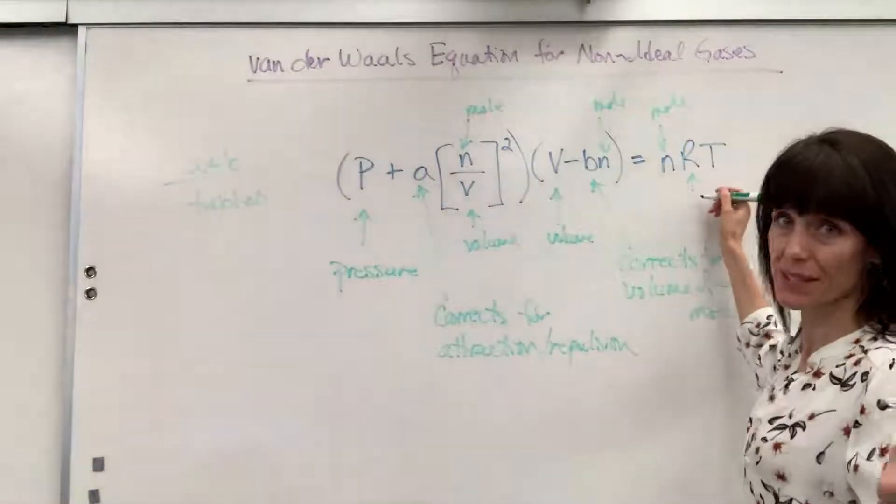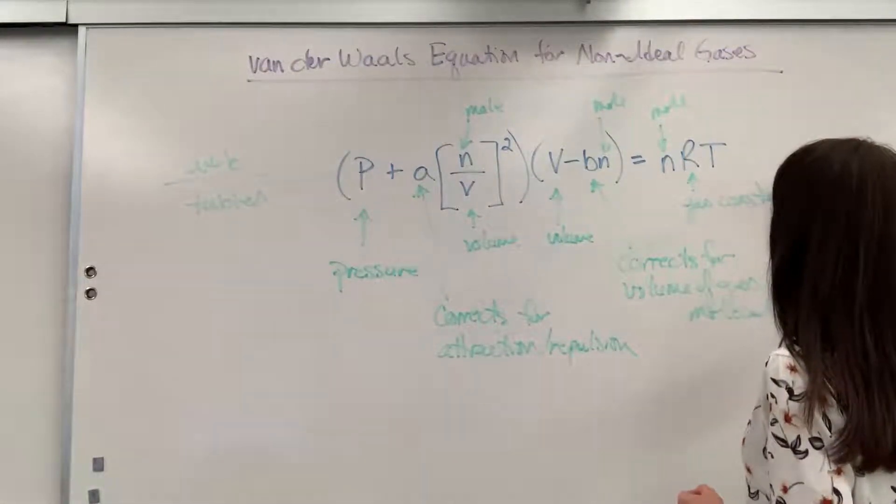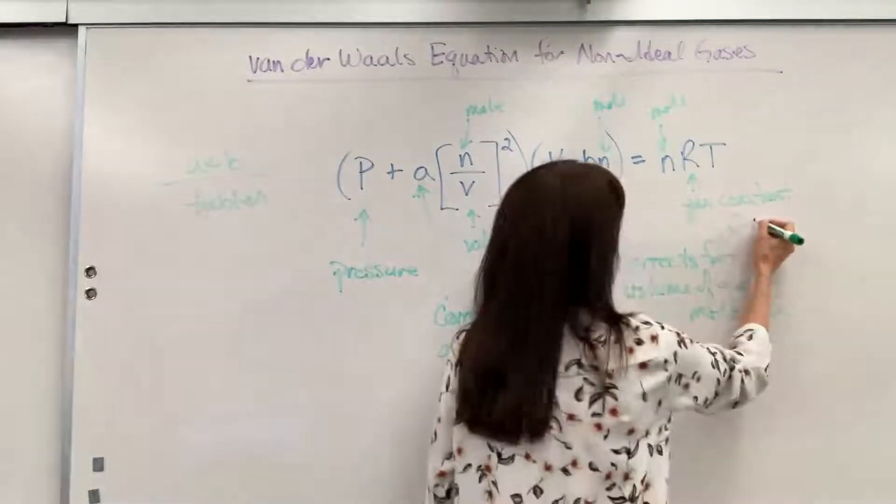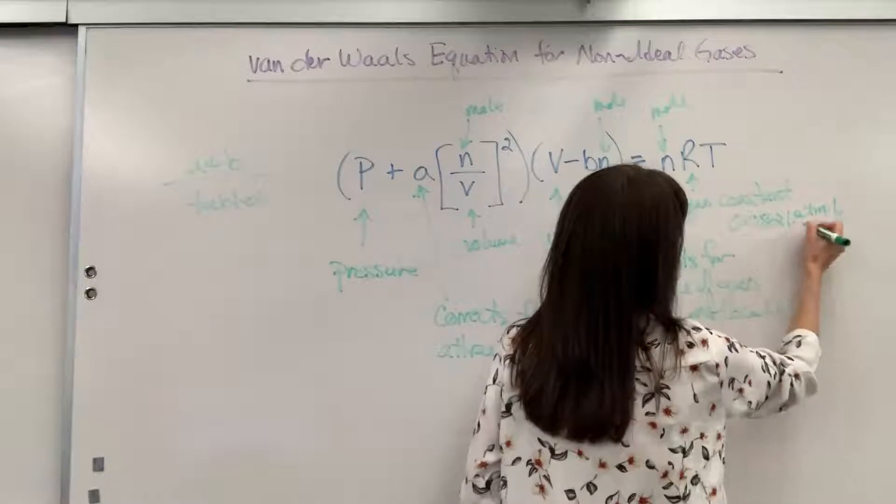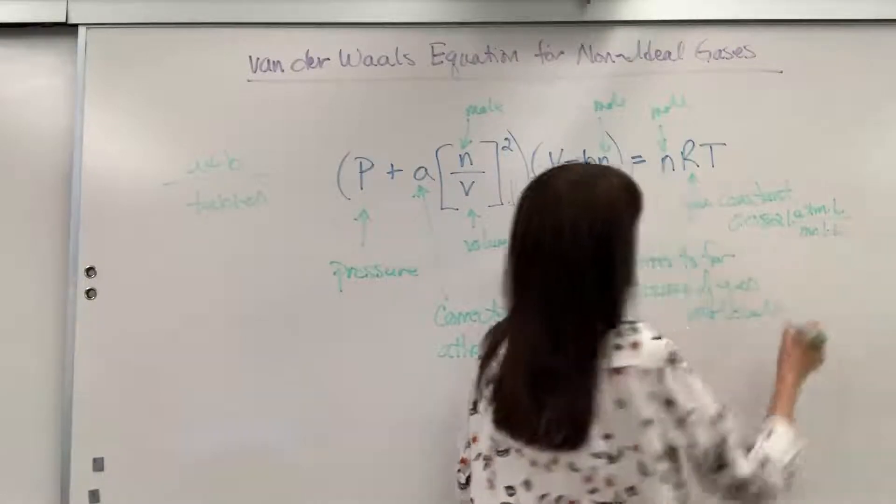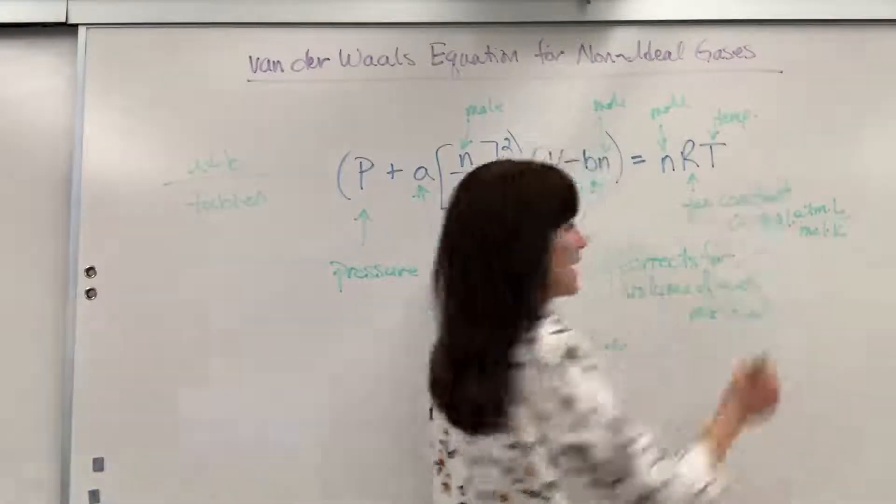R, still the same gas constant. And I'm going to give you that number again. Here it is. 0.0821 ATM times liter divided by mole times Kelvin. And then T, that is our temperature.